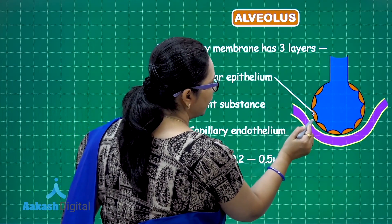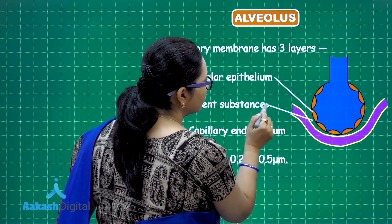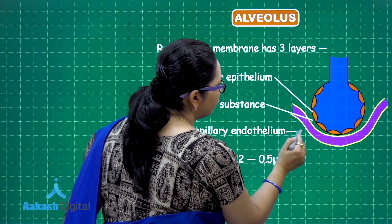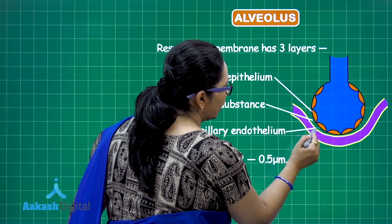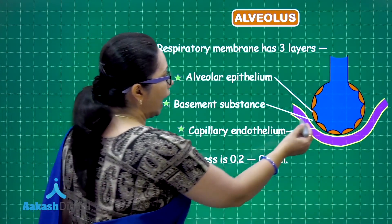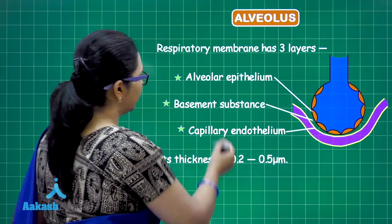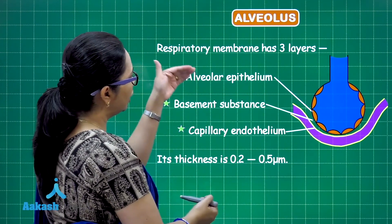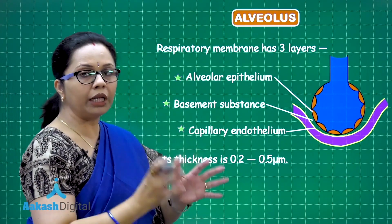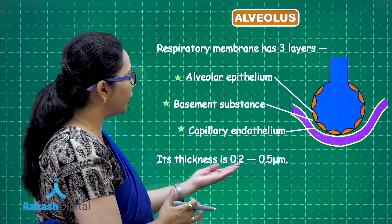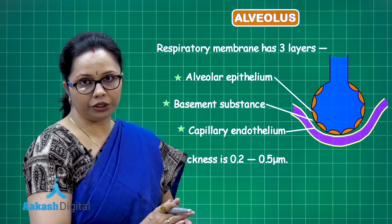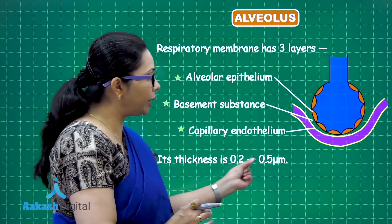The capillary endothelium is also simple squamous epithelium. These three layers together — alveolar epithelium, basement substance, and capillary endothelium — have a combined thickness of 0.2 to 0.5 micrometers.